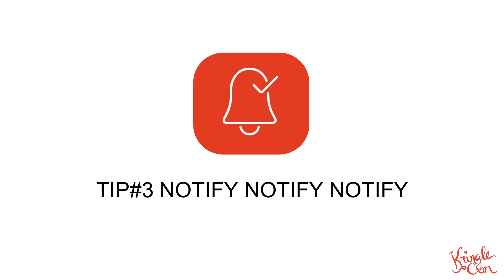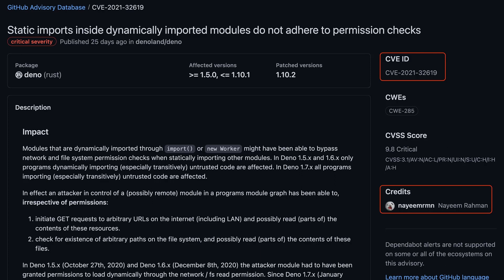You can't assume that everyone's running the latest version. Give them a path to update to the patched version. If the maintainer opted to use a private GitHub security advisory while you were collaborating, making it public will become very useful. Since GitHub is a CNA — a CVE Numbering Authority — when the advisory is published, it becomes available to downstream consumers through the CVE number.